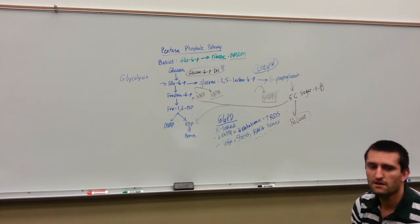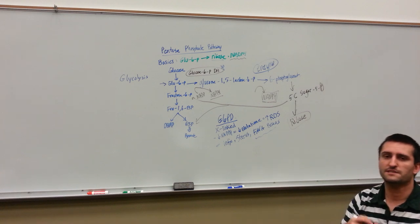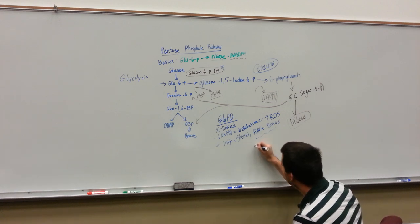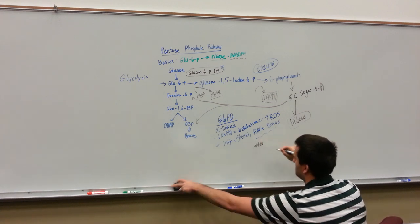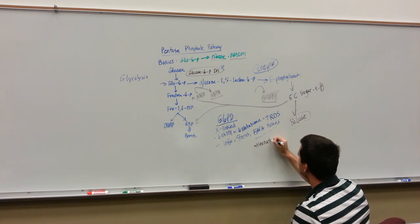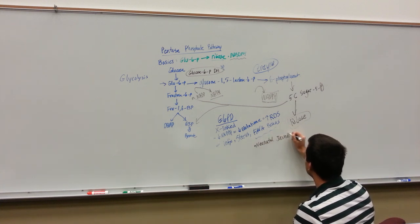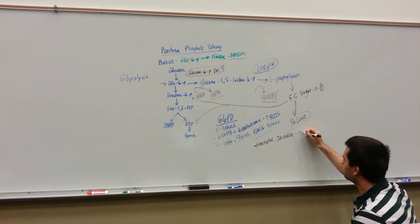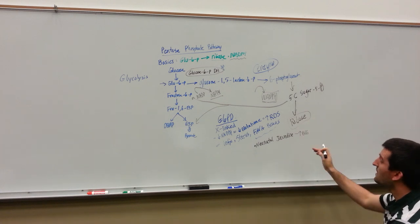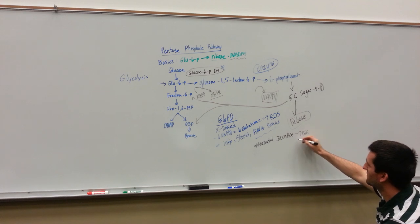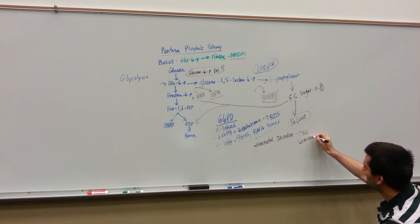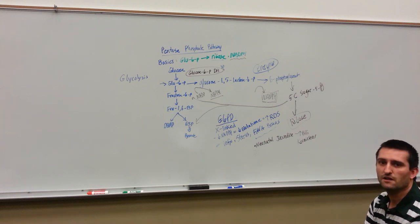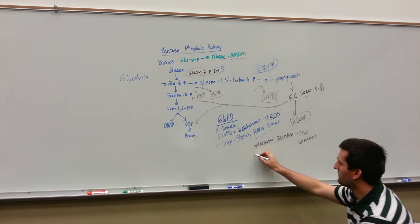Some of the symptoms of G6PD will be neonatal jaundice, which will lead to an increase in bilirubin. If we have a large increase in bilirubin, it can lead to kernicterus — which is pretty much the bilirubin within the brain causing neurologic symptoms. It's an emergency.